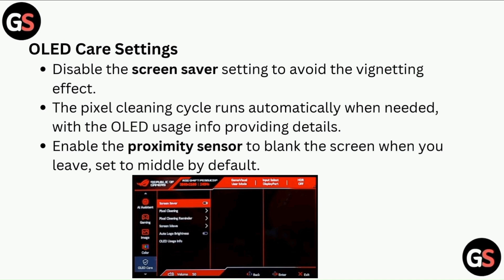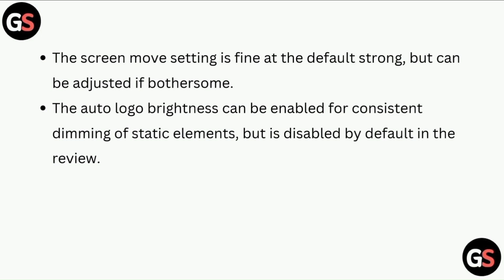Enable the proximity sensor to blank the screen when you leave, set to middle by default. The screen move setting is fine at the default strong, but can be adjusted if bothersome. The auto logo brightness can be enabled for consistent dimming of static elements, but is disabled by default in the review.